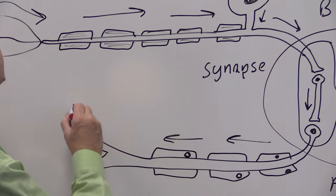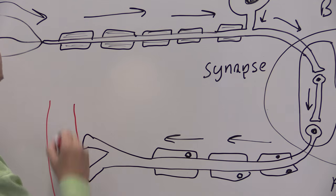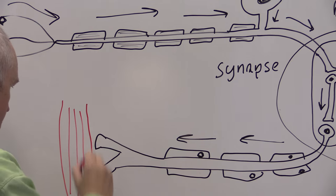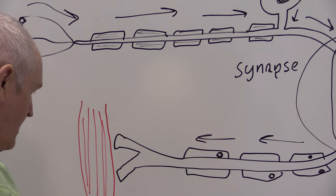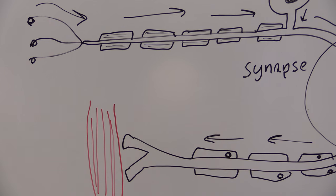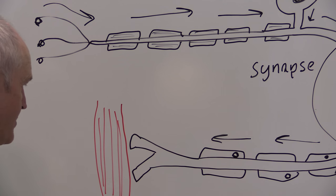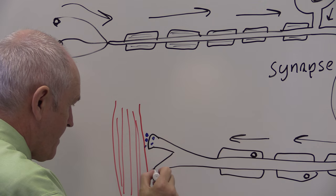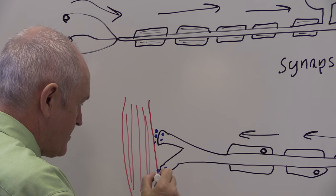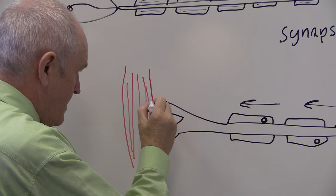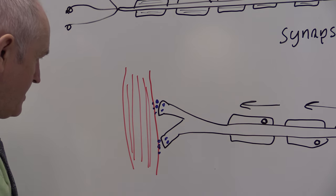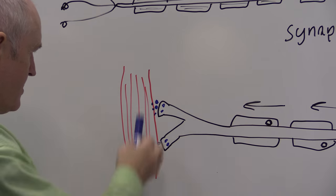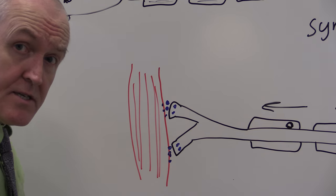The motor neuron, of course, is going to terminate in a muscle. So here's a skeletal muscle. When the acetylcholine is released from the motor end bulbs of the motor neuron, that will diffuse across onto the surface of the muscle, causing the muscle to depolarize.